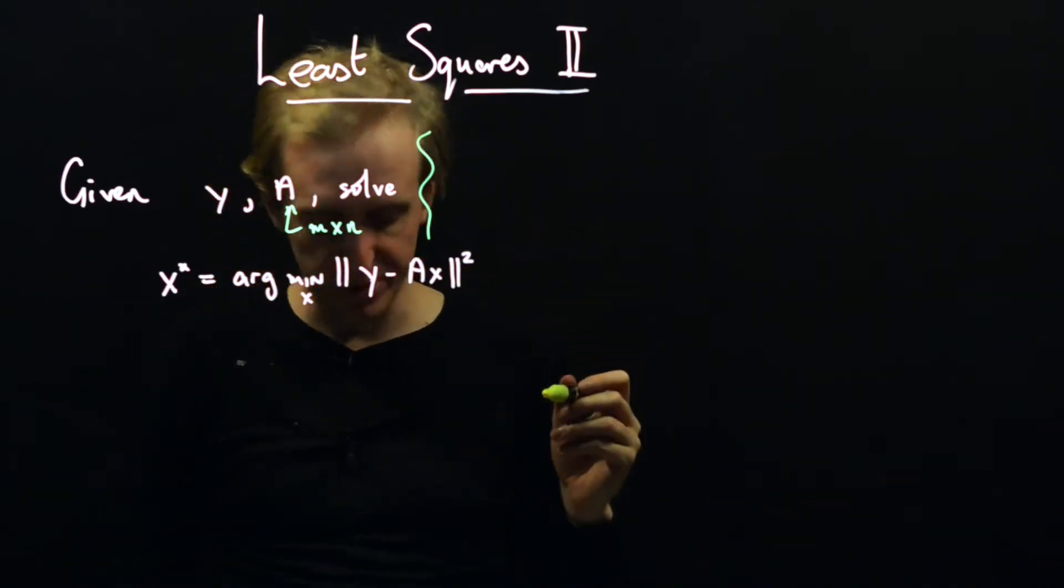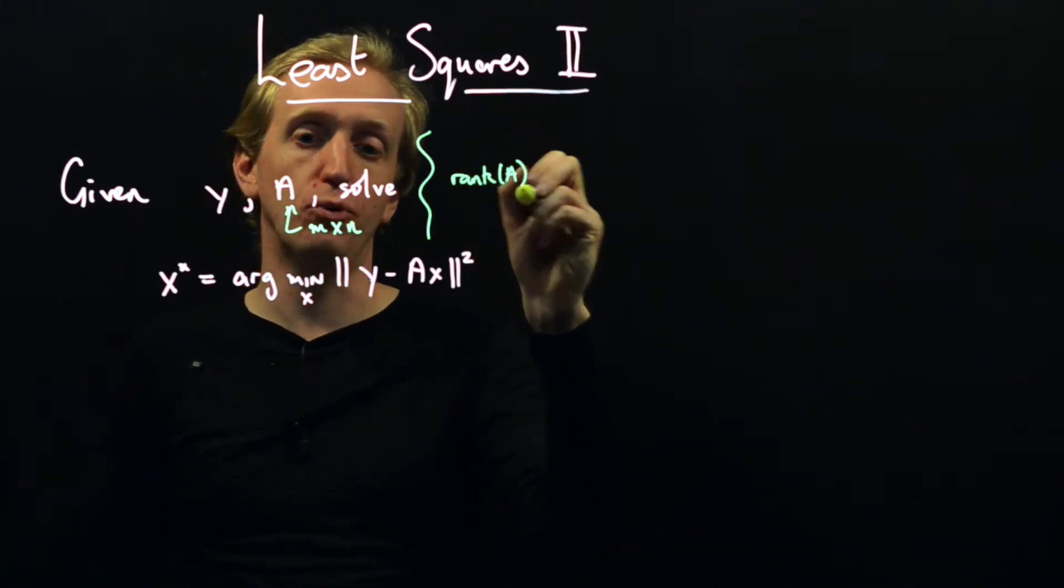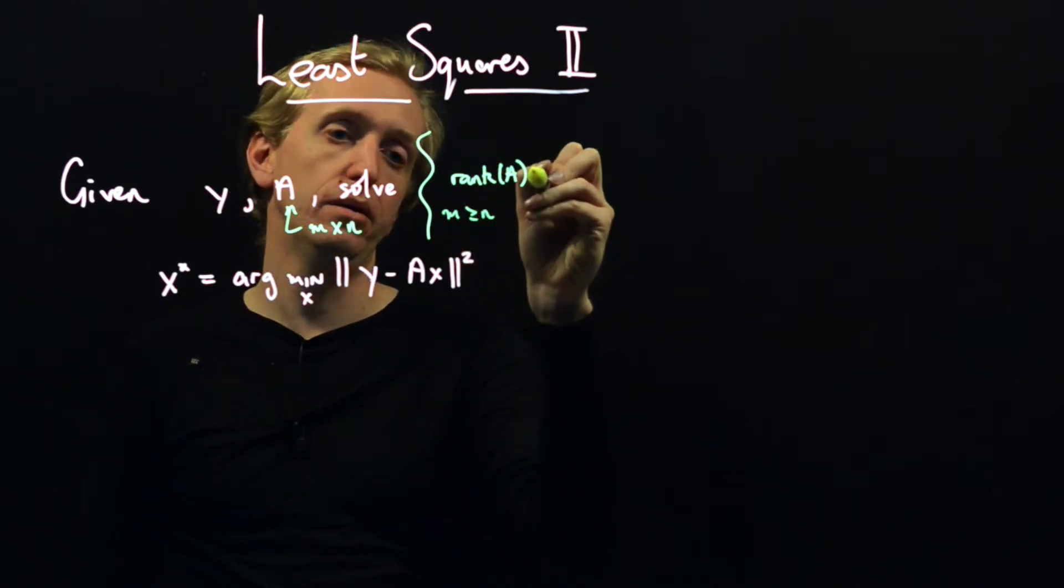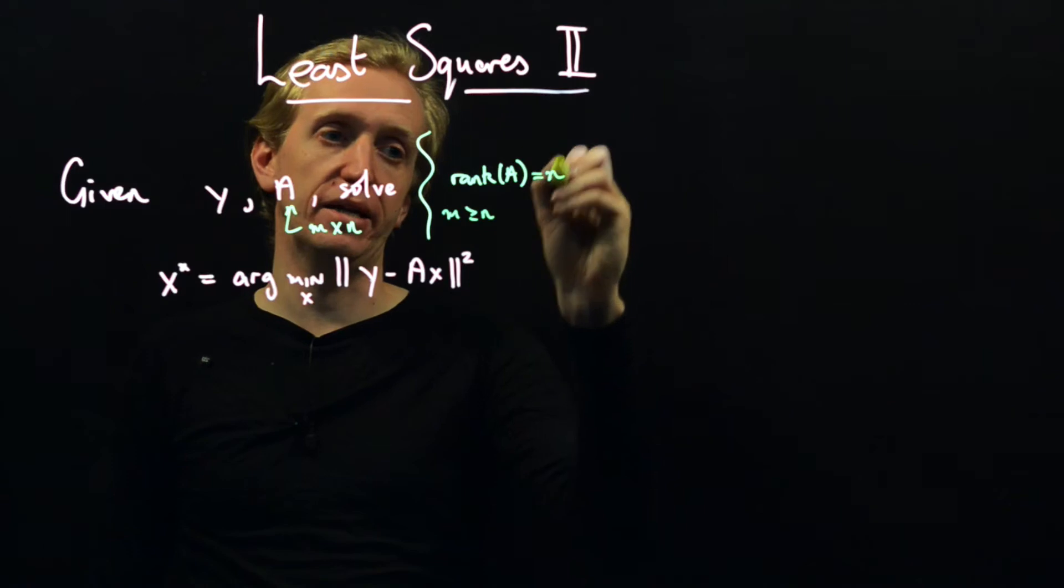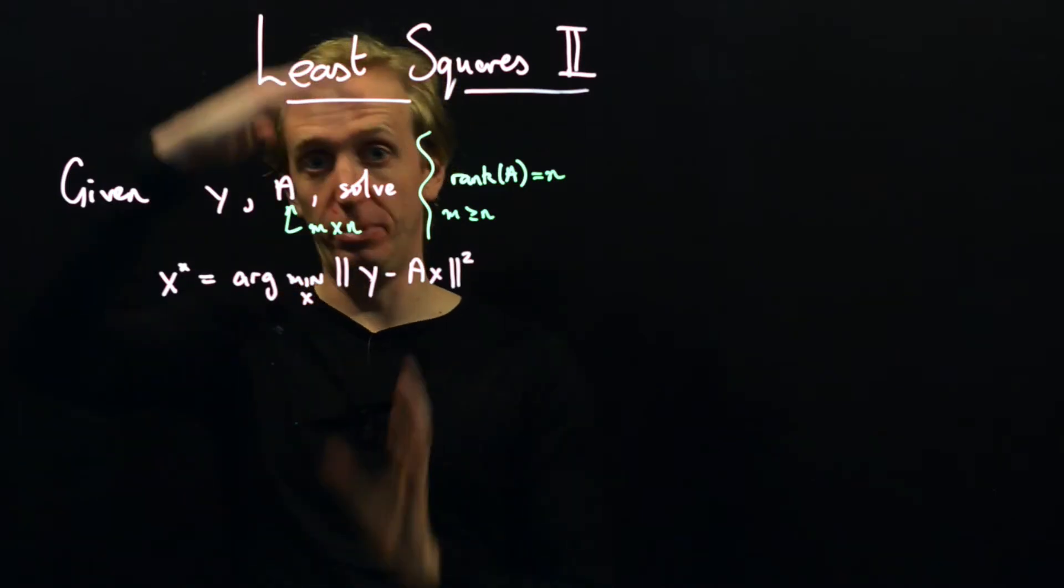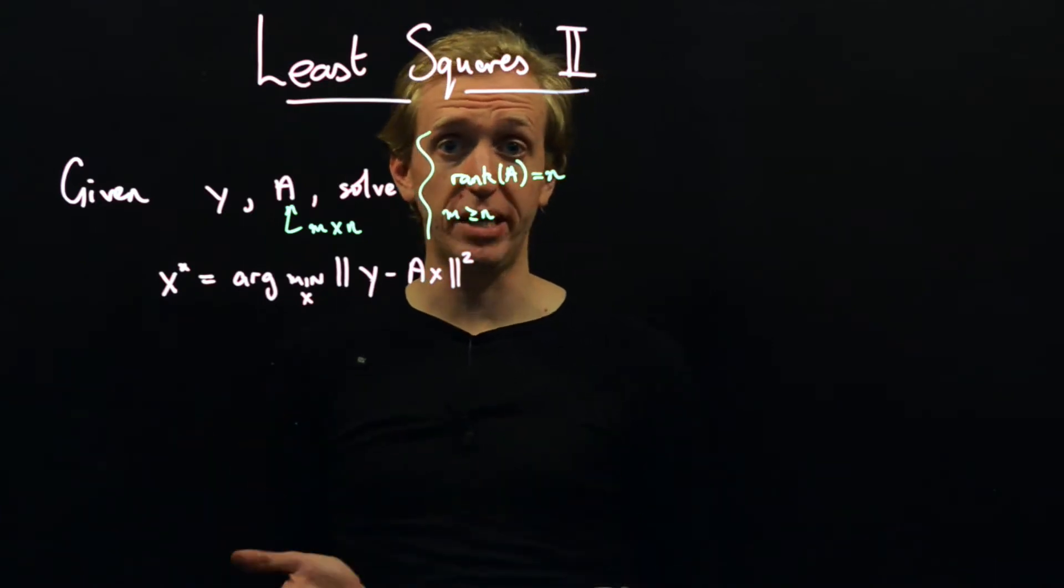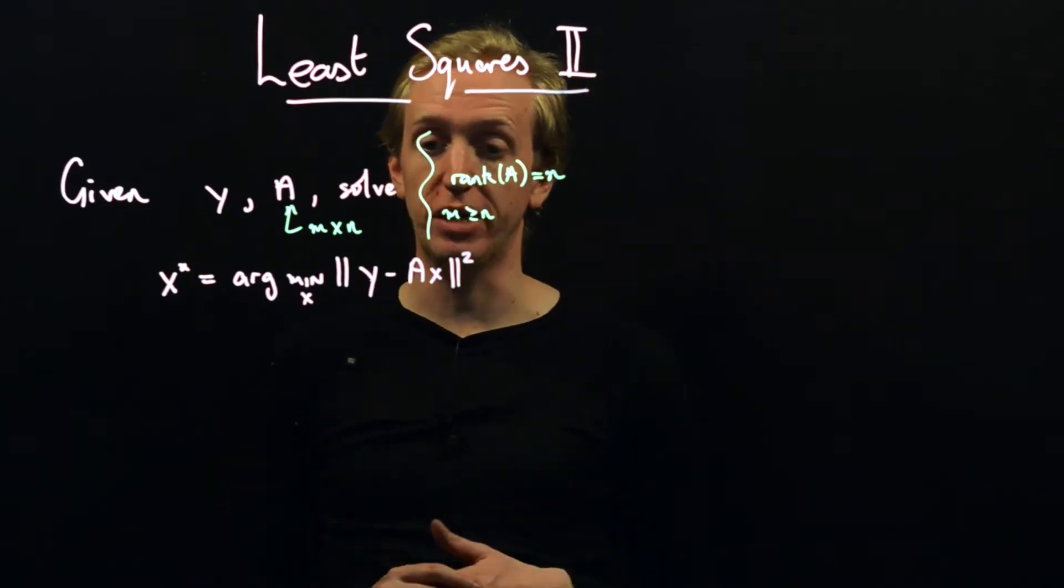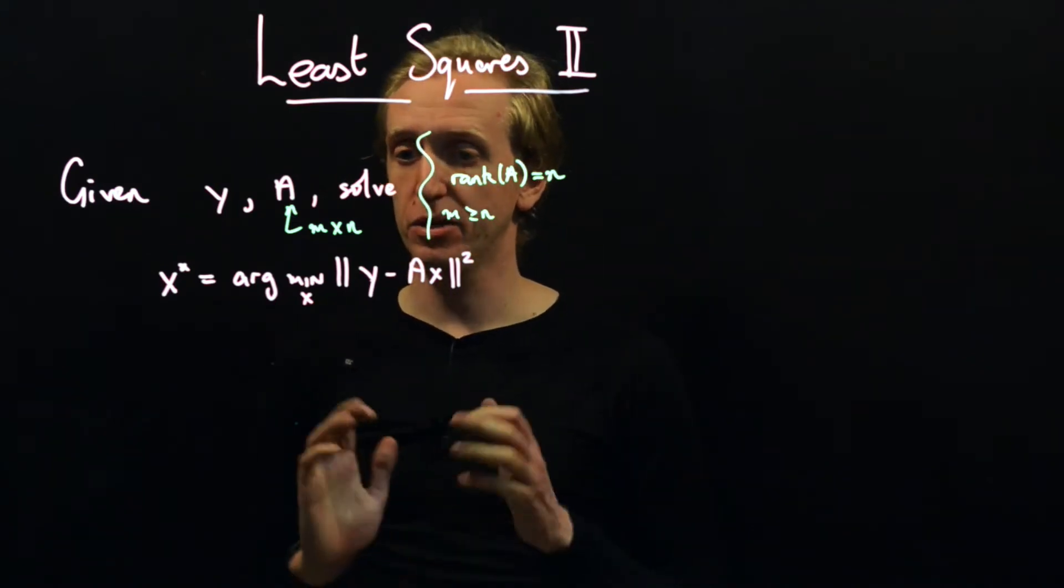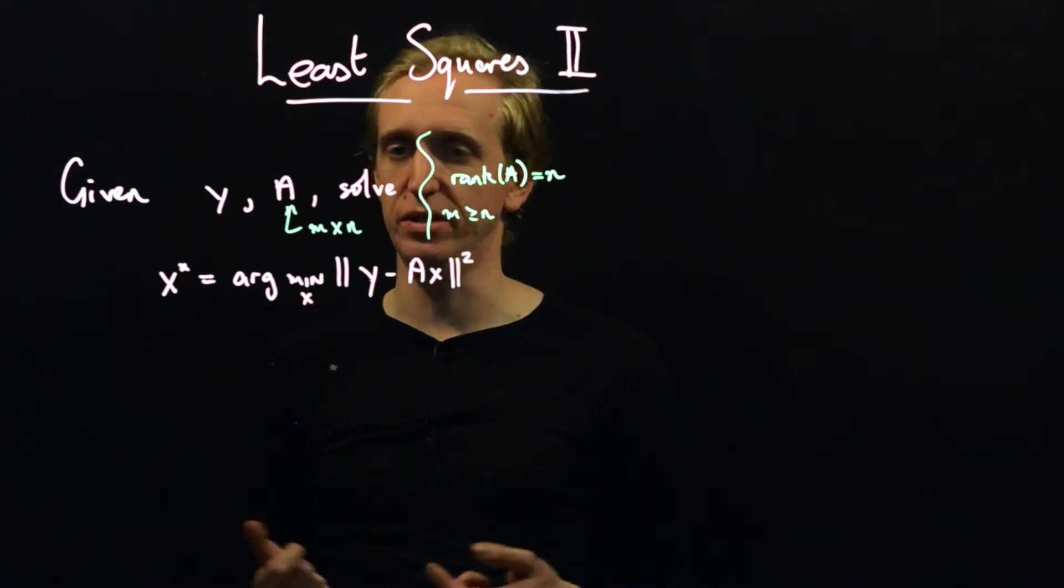So yeah, tall and thin and for simplicity, we'll just say that the matrix A has full rank, which because it's tall and thin, m is greater than or equal to n. And so the rank is n in this case. So we have n independent columns. The matrix A could be very, very tall and it's certainly not short and fat. And so we don't have many or any solutions. We're unlikely to have any solutions to the equation y equals Ax.